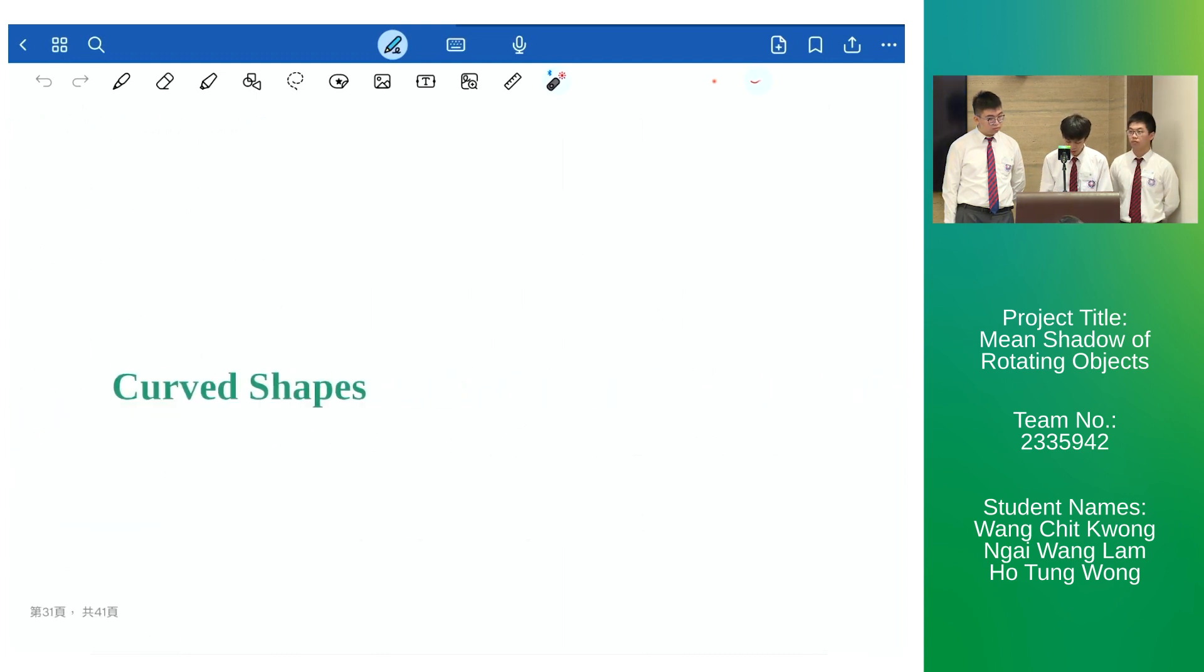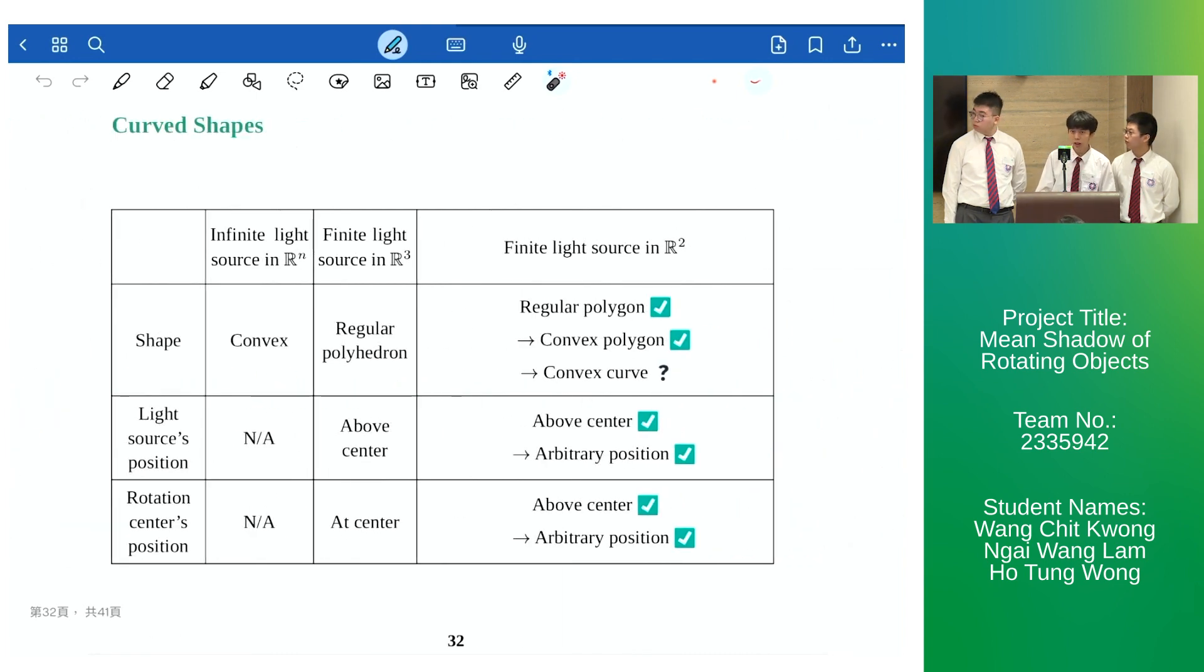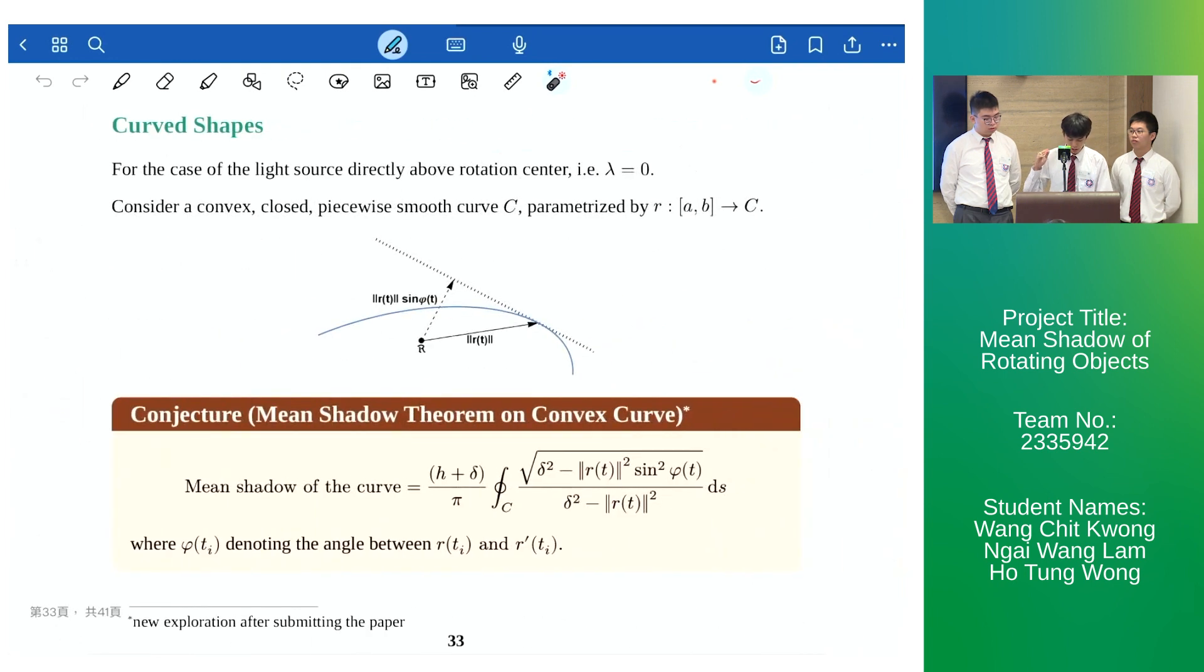Having freed the constraints on the position of the light source and rotation center, we now extend the shape from convex polygons to convex curves. For the case of the light source directly above the rotation center, we consider a convex closed piecewise smooth curve C parametrized by a vector function R. After some calculations, we propose the following conjecture which gives the mean shadow of the curve as a line integral.